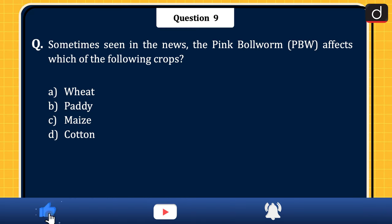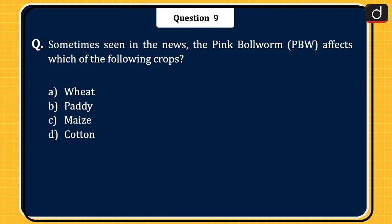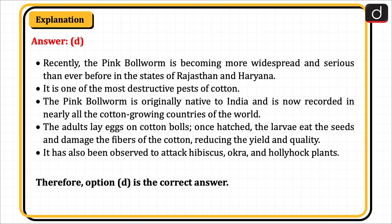The next question: sometimes seen in the news, the pink bollworm affects which of the following crops? Wheat, paddy, maize, or cotton? The correct answer is option D, cotton. Recently, the pink bollworm is becoming more widespread and serious than ever before in the states of Rajasthan and Haryana. It is one of the most destructive pests of cotton. The pink bollworm is originally native to India and is now recorded in nearly all the cotton-growing countries of the world. The adults lay eggs on cotton bolls; once hatched, the larvae eat the seeds and damage the fibres, reducing yield and quality. It has also been observed to attack hibiscus, okra and polyhawk plants. Therefore, option D is the correct answer.